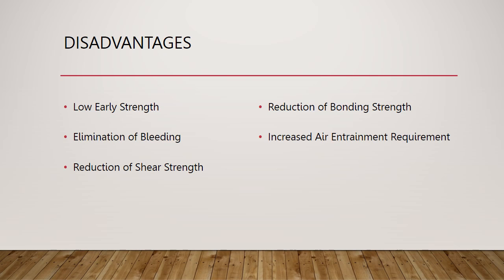Another disadvantage is the reduction of shear strength with the addition of fly ash. There is a significant reduction in shear strength, therefore additional reinforcement or an increase in member thickness may be required during the structural design process. Reduction in bonding strength between the concrete and embedded steel rebar is another disadvantage; not only does fly ash reduce the bonding strength, but an increase in embedment seems to increase the effect as well, meaning you can't simply add more embedment when you add fly ash. Finally, if class F fly ash is used, there will be an increase in the requirement for air entrainment admixtures, due to the unburnt carbon in class F that tends to absorb those admixtures.